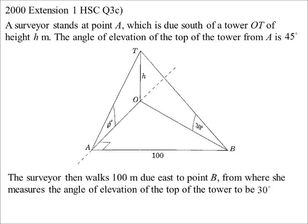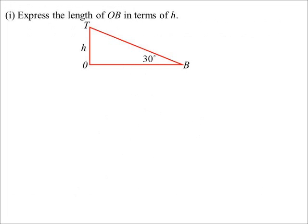They then walk 100 meters due east. So because it's due east, now they've told us we were originally south. So if I've gone due east, that must be a right angle then, basically there. And now we have a look at the tower, and it's 30 degrees. So we want to find an expression for OB.